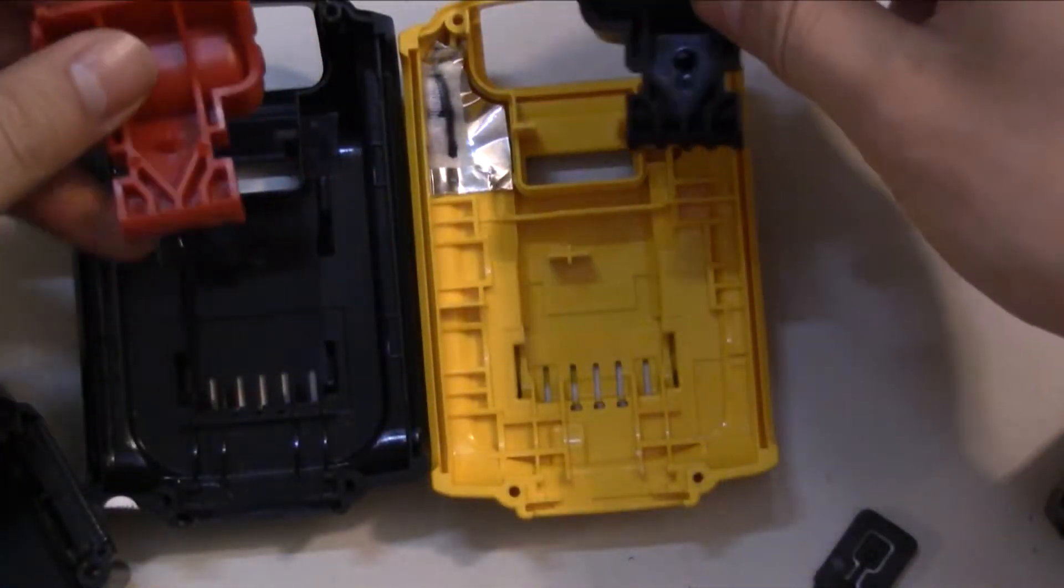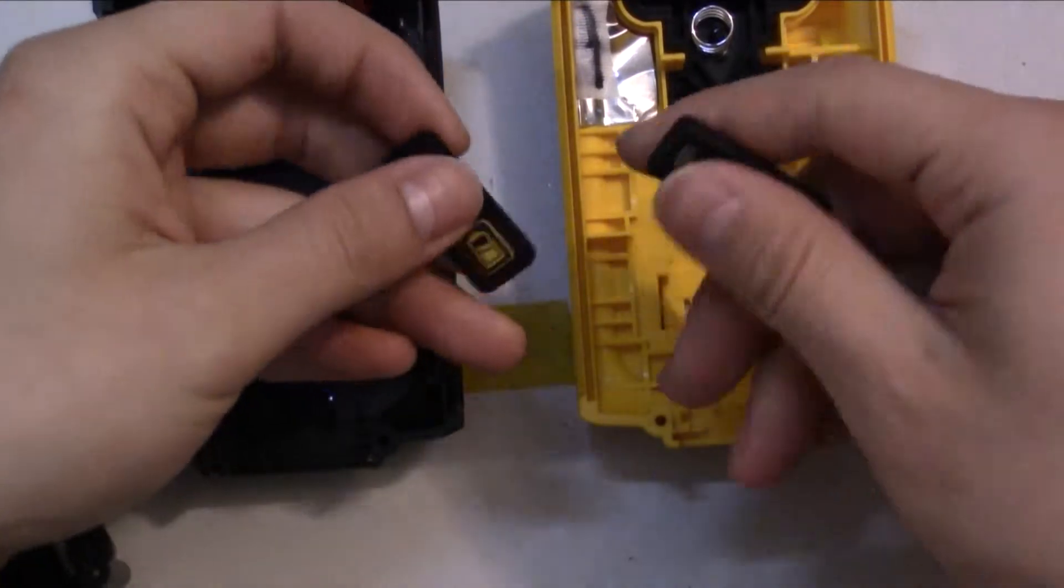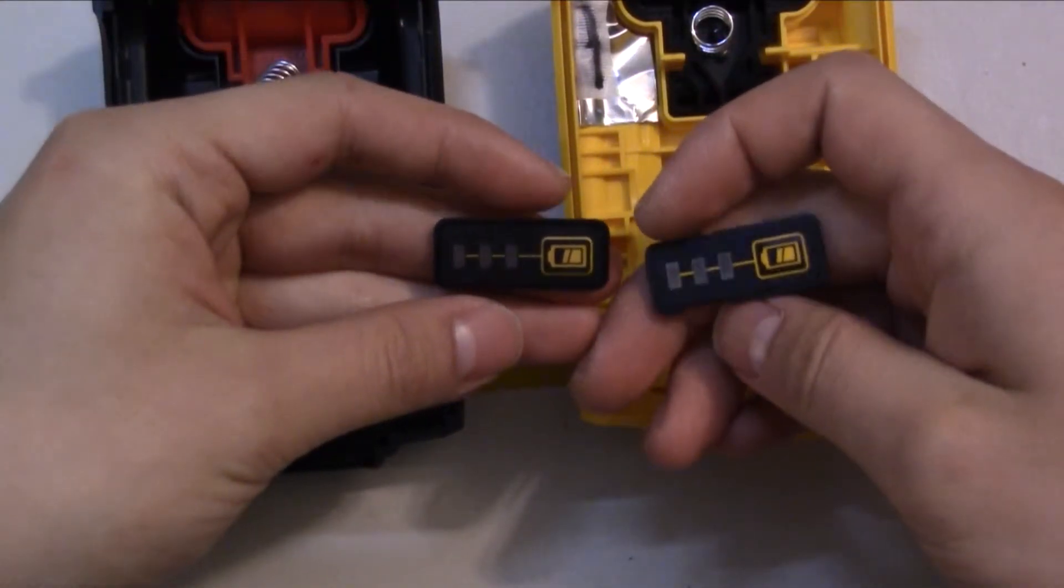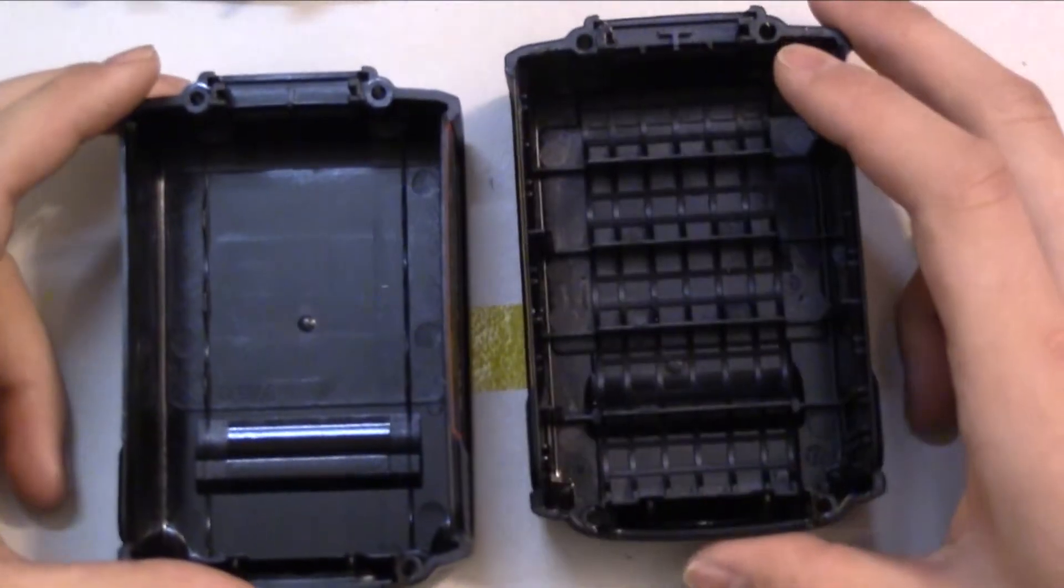The same with the latch. The genuine DeWalt battery has a heavier latch. And then these two battery ones, they look close enough actually. Now the bottom shell is pretty much the same story.